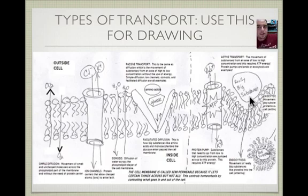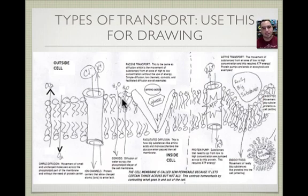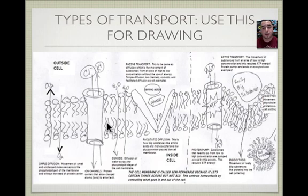Now, types of transport. Everything to the left of the dotted line is passive transport — no energy or ATP required. Everything to the right is active transport. The word 'diffusion' always means passive transport. The first type is simple diffusion: small, uncharged molecules can go easily in and out without any help.